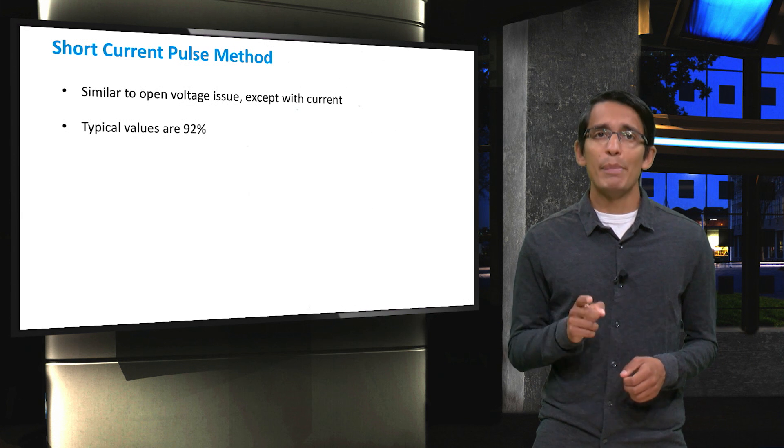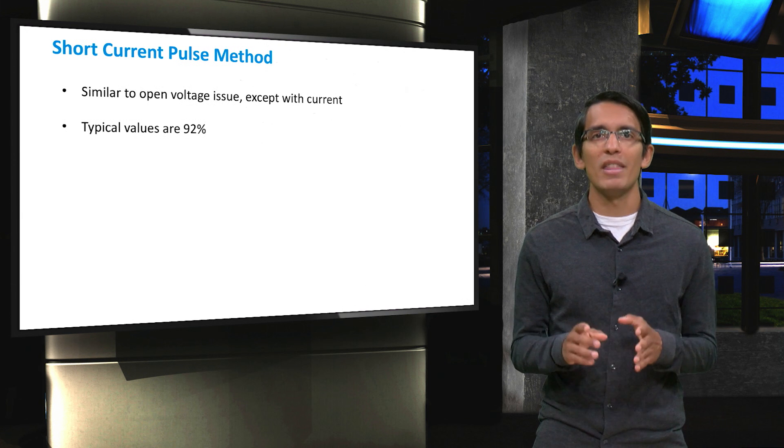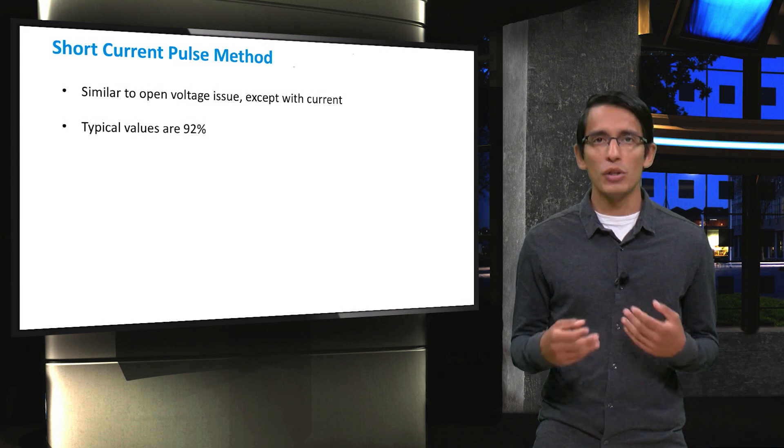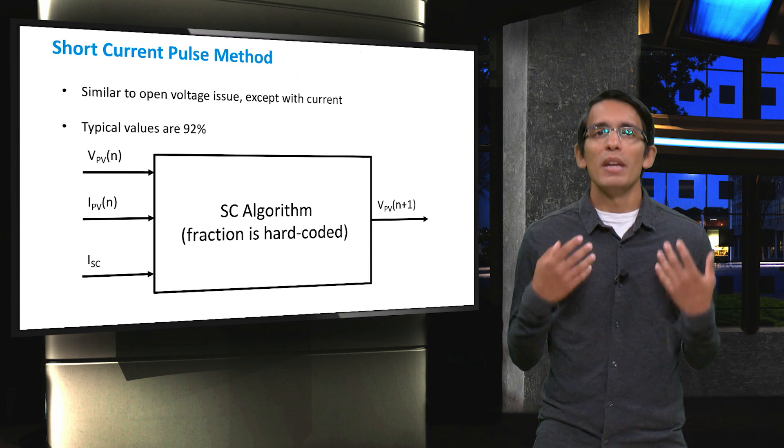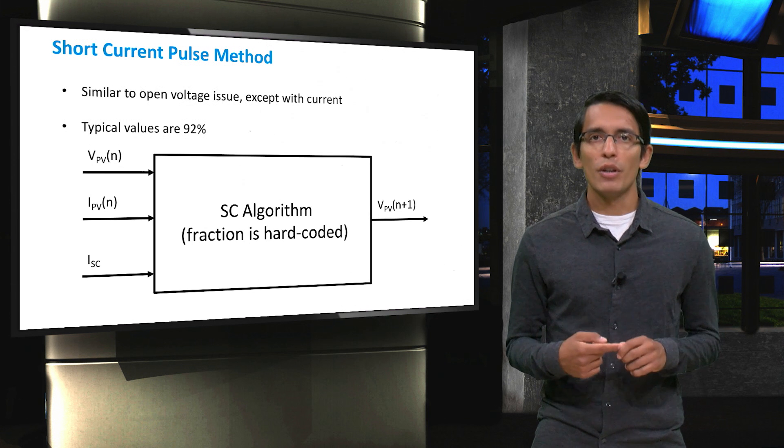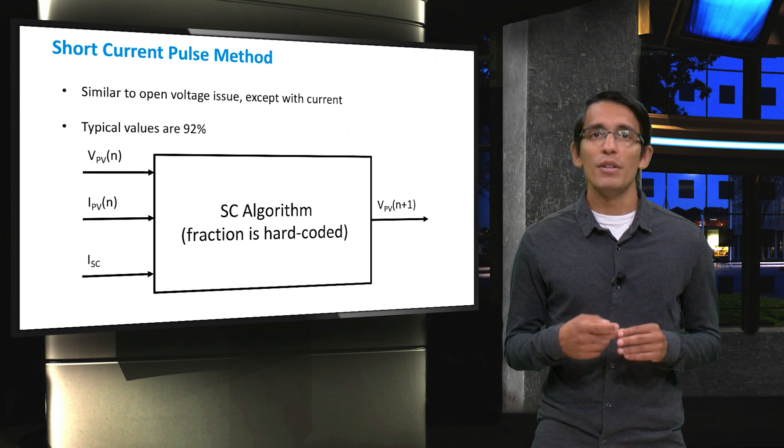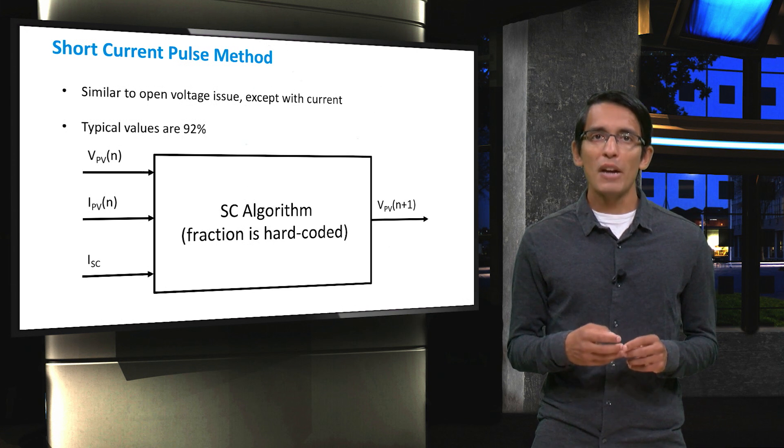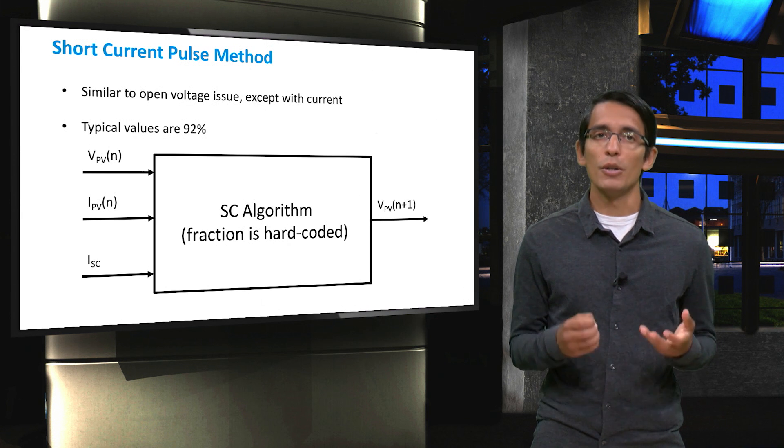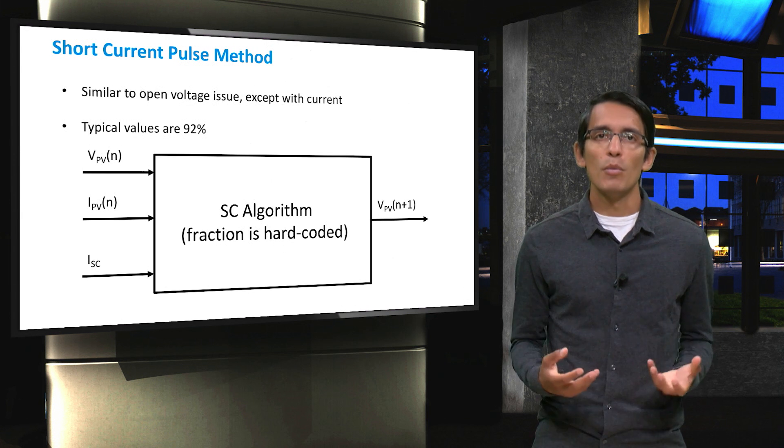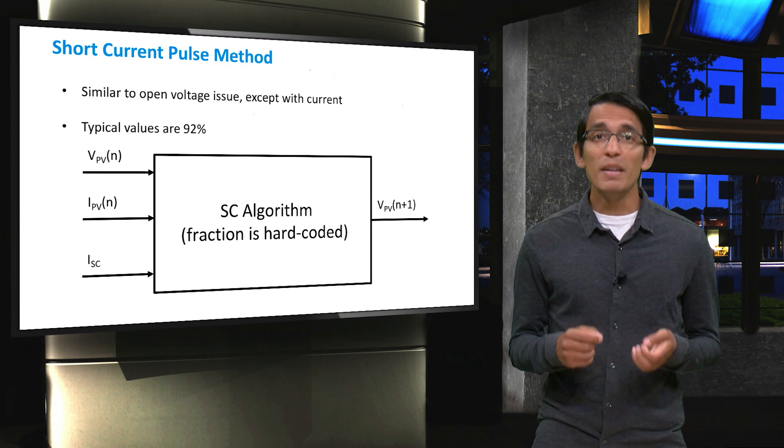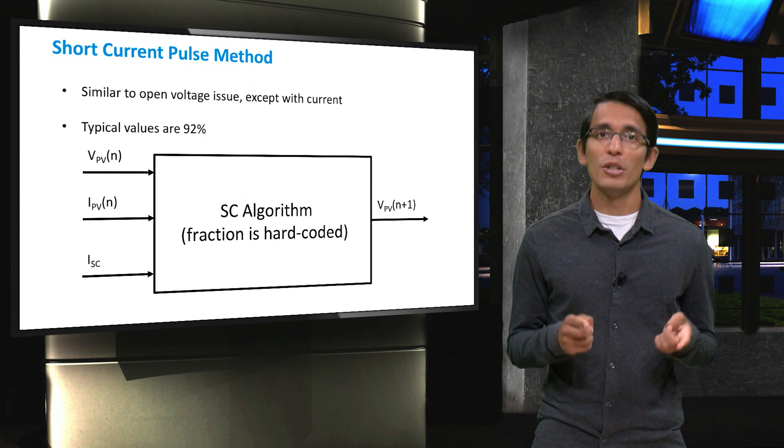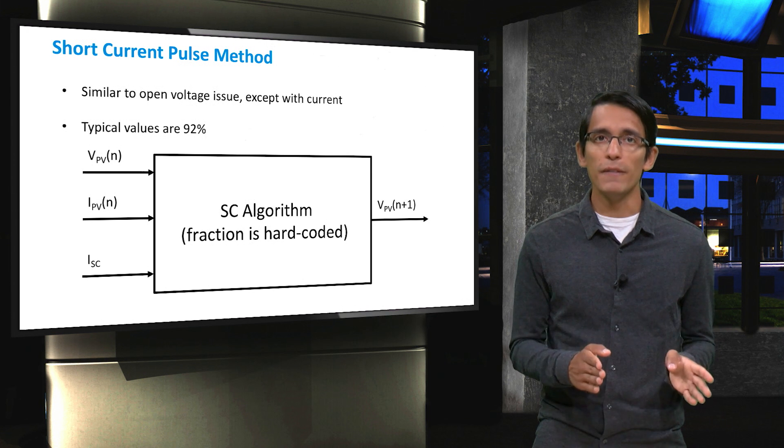However, keep in mind that the MPPT can only really modify the applied voltage to the panels, so this method is a bit trickier than the fractional voltage method. The input for this method is the short circuit current, as well as the operating current, IPV. The algorithm will check to see if the fraction of IPV to ISC is relative to the hard-coded value. Furthermore, the operating voltage, VPV, is necessary, and it will increase or decrease that voltage depending on the fraction of IPV to ISC.